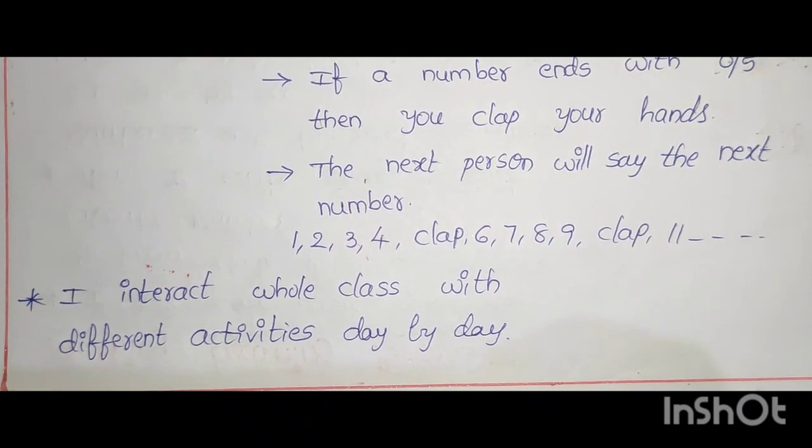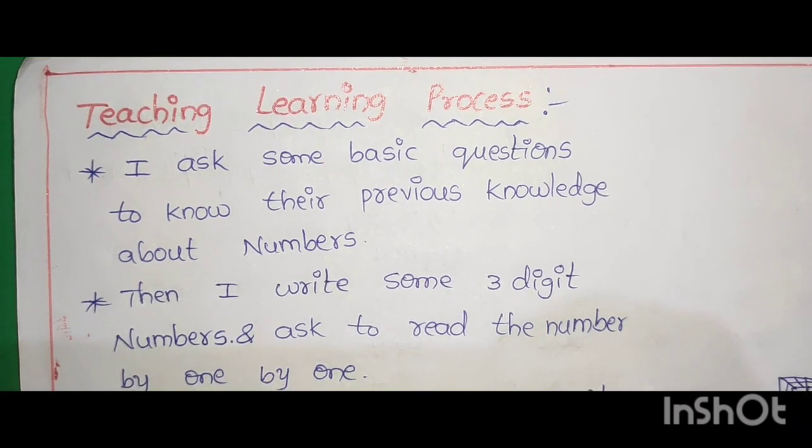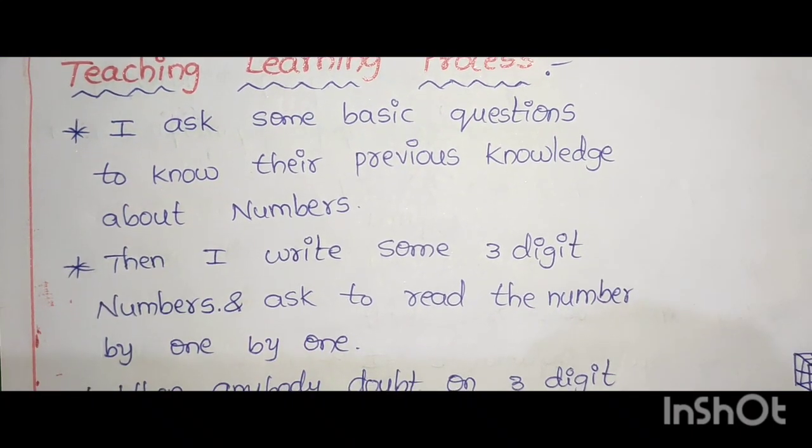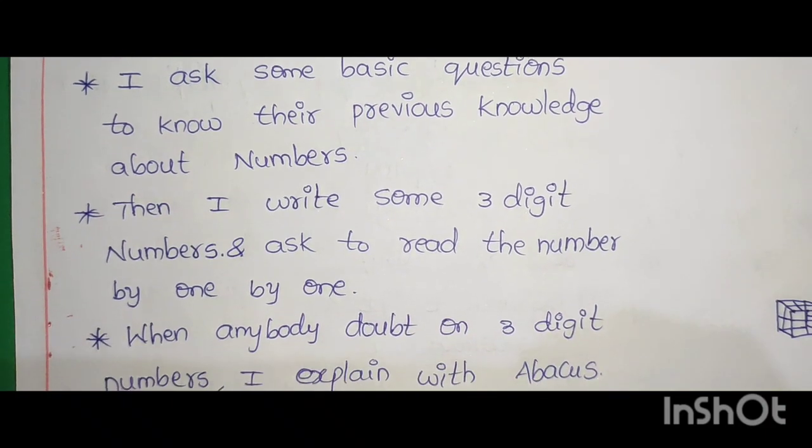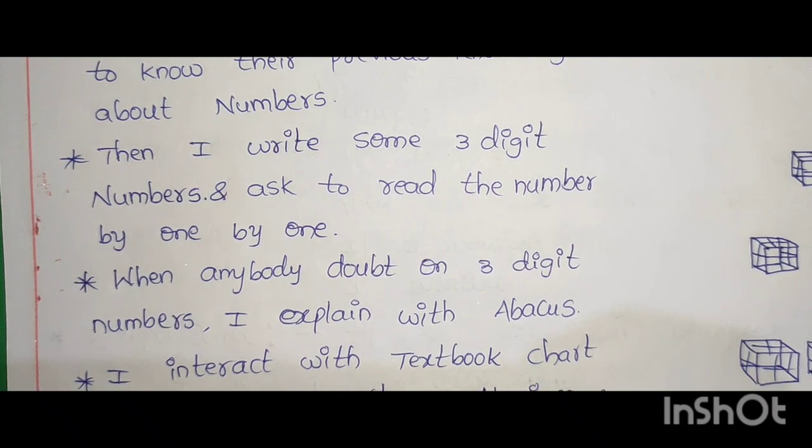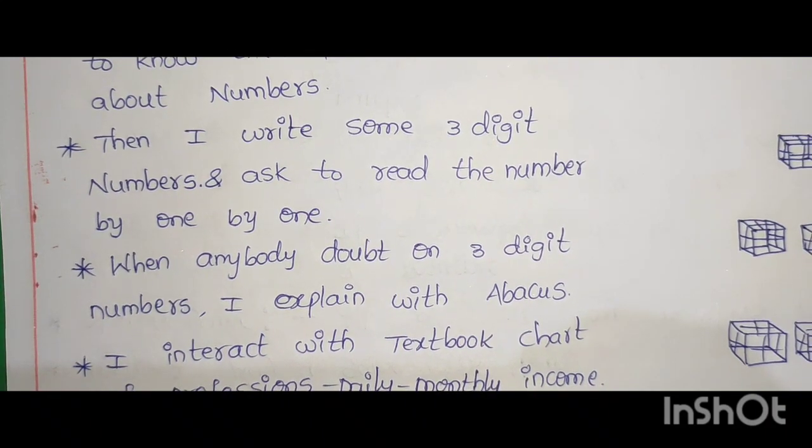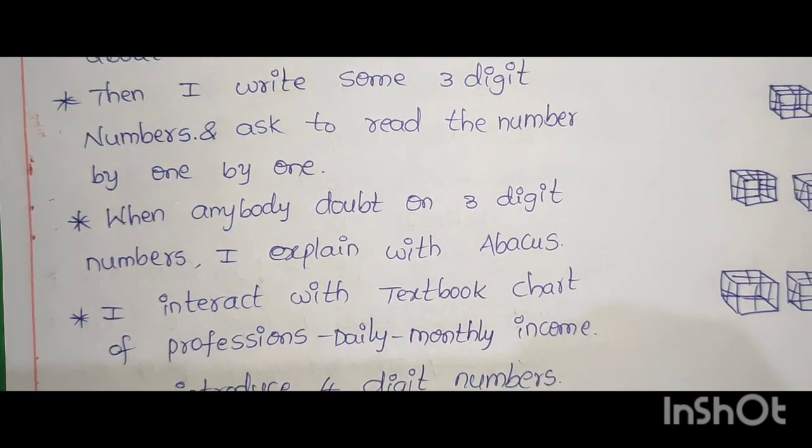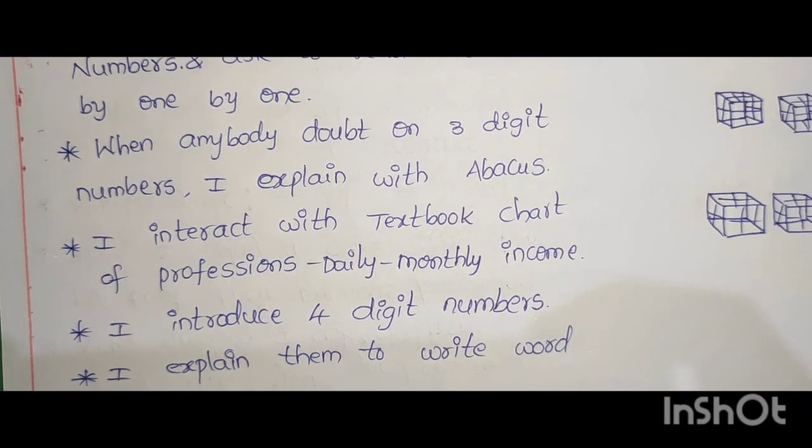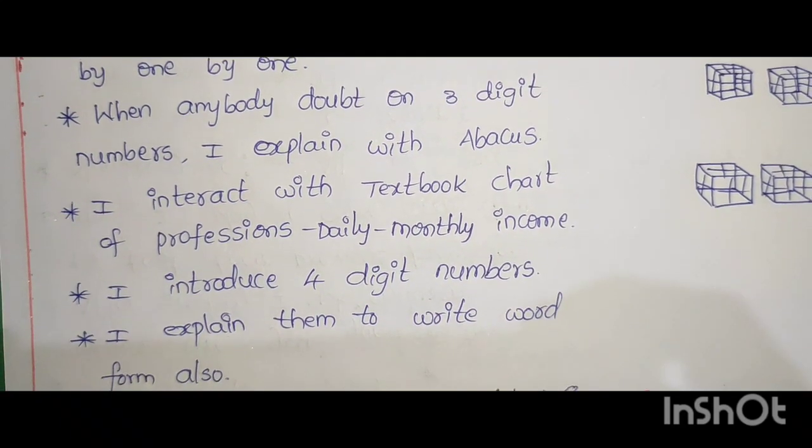I interact whole class with different activities day by day. Teaching learning process: I ask some basic questions to know their previous knowledge about numbers. Then I write some 3-digit numbers and ask to read the number one by one. When anybody has doubt on 3-digit numbers, I explain with abacus. I interact with textbook chart of daily monthly income. I introduce 4-digit numbers. I explain them to write word form also.